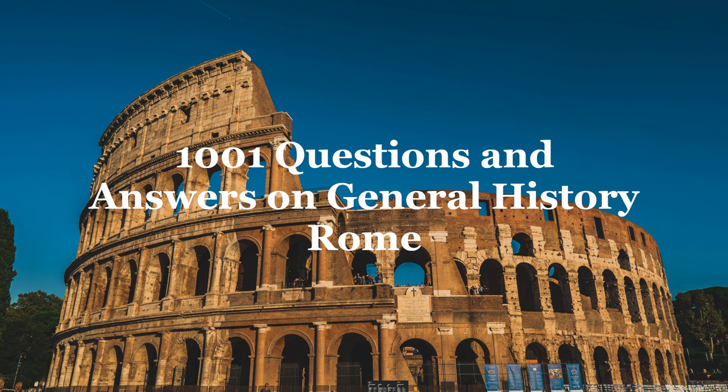Sixty-five: What action did the plebeians take about 494 BC? Their condition becoming unbearable, they departed in a body to the Sacred Mount, leaving the city to the patricians. Sixty-six: How did the patricians compromise? By cancelling the plebeian debt, and by assenting to the appointment of two magistrates called tribunes to be chosen from the ranks of the people. Sixty-seven: What power was given the tribunes? They could annul any law passed by the Senate considered injurious to the plebeians by pronouncing the word veto — 'I forbid.'